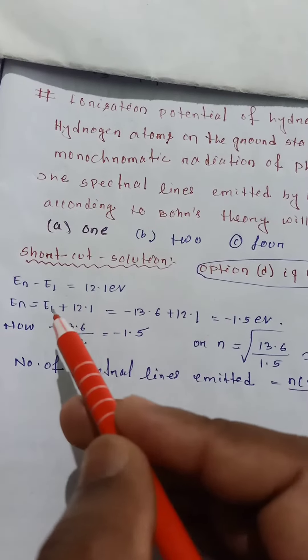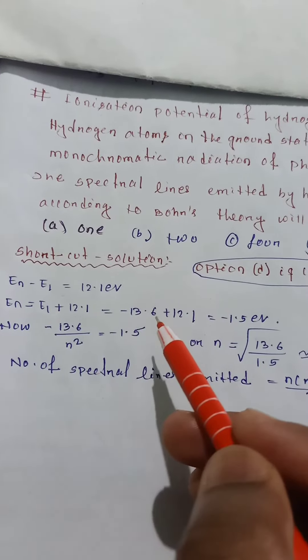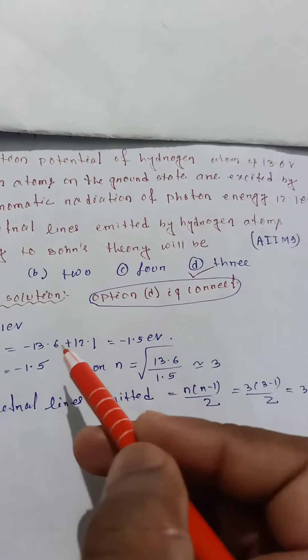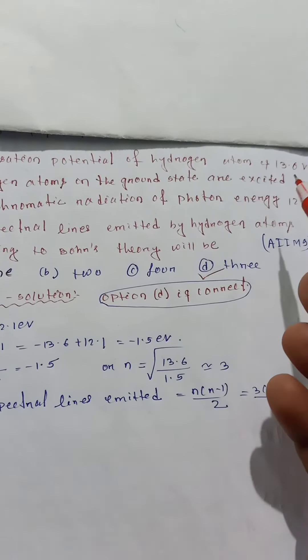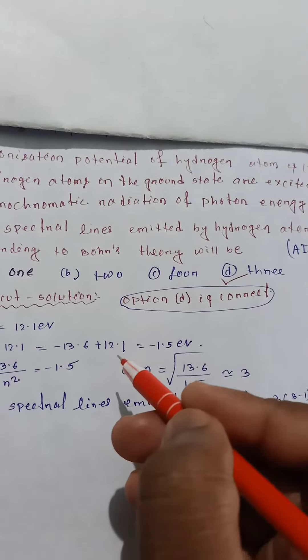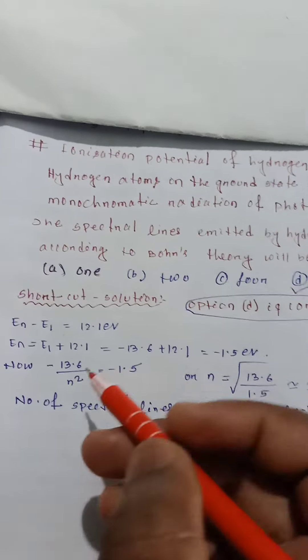That energy E1, ground state energy, is equal to minus 13.6. The ground state is 13.6, so plus 12.1, we get minus 1.5 electron volts.